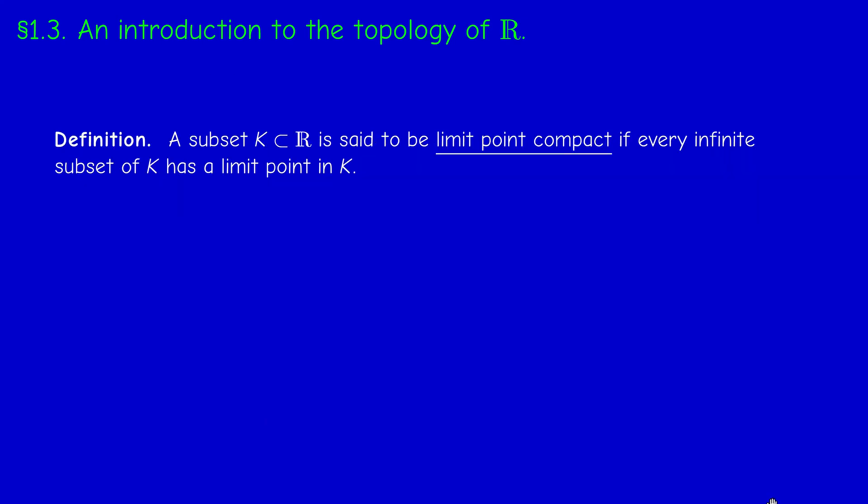Last condition, last property, is what we call limit point compactness. We say that the subset K of R is limit point compact if every infinite subset of K has a limit point in K. And once again, not all subsets of R satisfy this property.